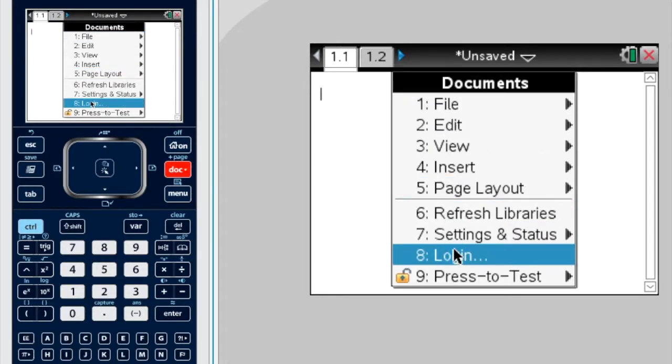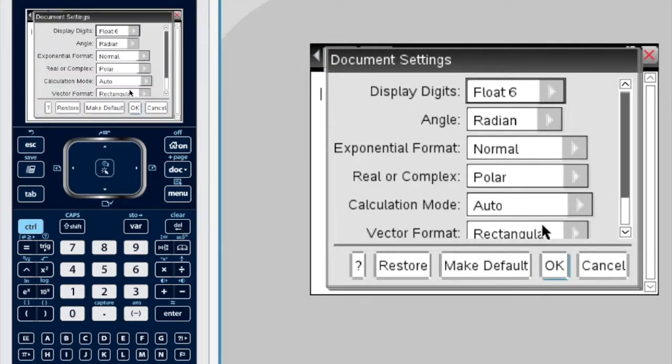So I'm going to go document, settings, document settings. Okay, so we're in angle radians, that's fine, we usually use radians.